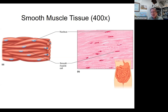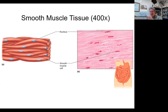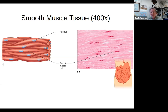The iris of your eye has circular smooth muscle in it. When you go from a dark theater out into a bright parking lot, your pupils constrict — that's due to contraction of smooth muscle in your iris. When you go into the movie theater and your eyes adjust to the darkness, they dilate — that's due to relaxation of smooth muscle in the iris. You don't think about it; your eyes automatically adjust.